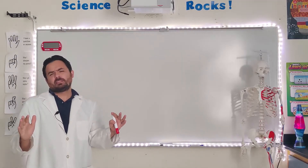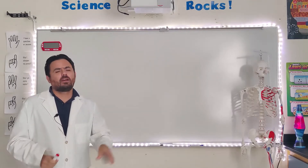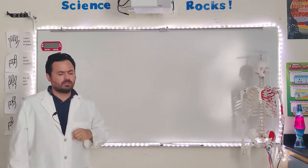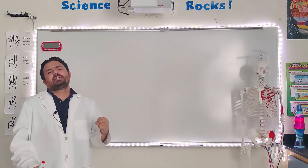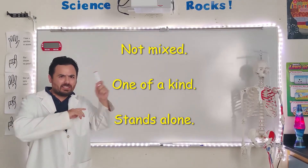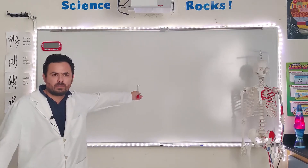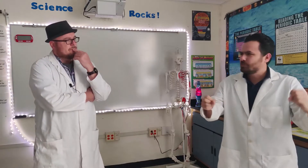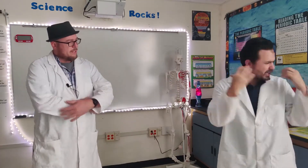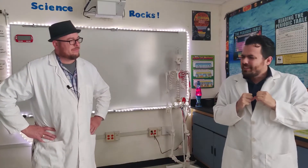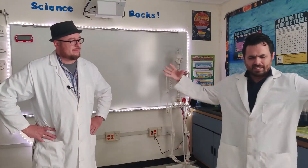Let's review elements. Elements are a pure substance that cannot be broken down any further. So what does pure mean? It means not mixed. It means one of a kind, and it means stands alone. Now that I've taught you everything about atoms and elements — which are pure substances — and how they're organized on the periodic table, Mr. Barber, what do you think happens when I take two elements and put them together?